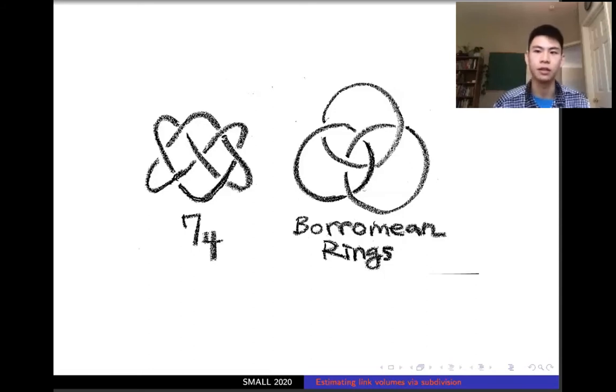On the right here is the Borromean rings. These are links. Informally speaking, links are knots that are mutually entangled. In fact, knots are simply links of one component. The links here are named after Italian aristocrats, the House of Borromeo. Okay, end of history lesson.